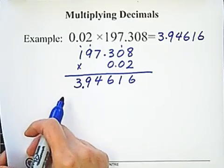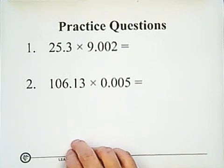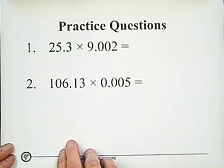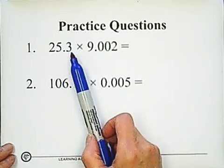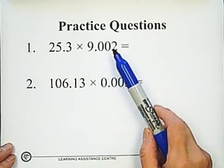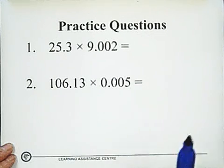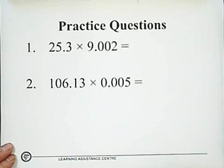Now we have two practice questions for you to practice. Just remember: when we do multiplication, first multiply the numbers, then to put the decimal in the right place, count the decimal places for each factor and put the decimal that many places from the right side to the left side.